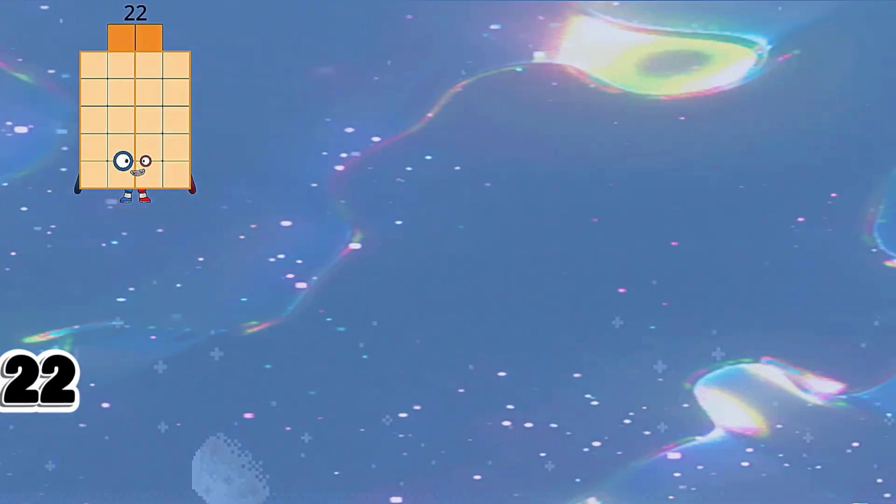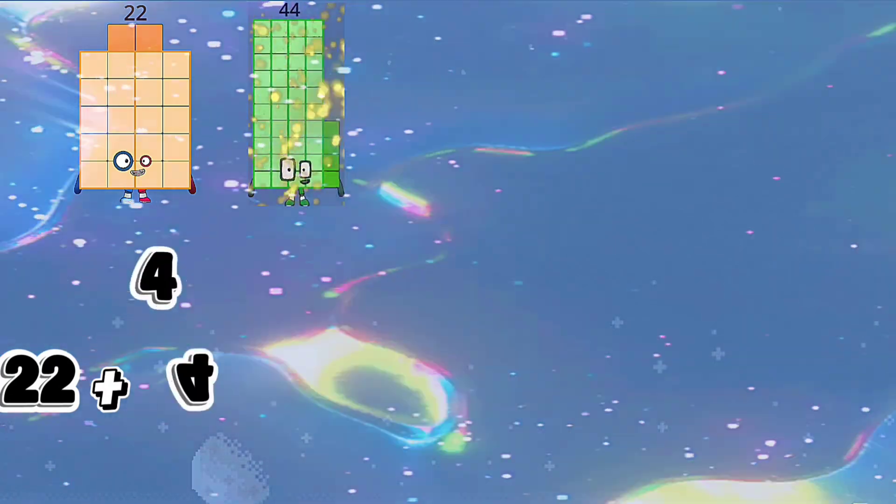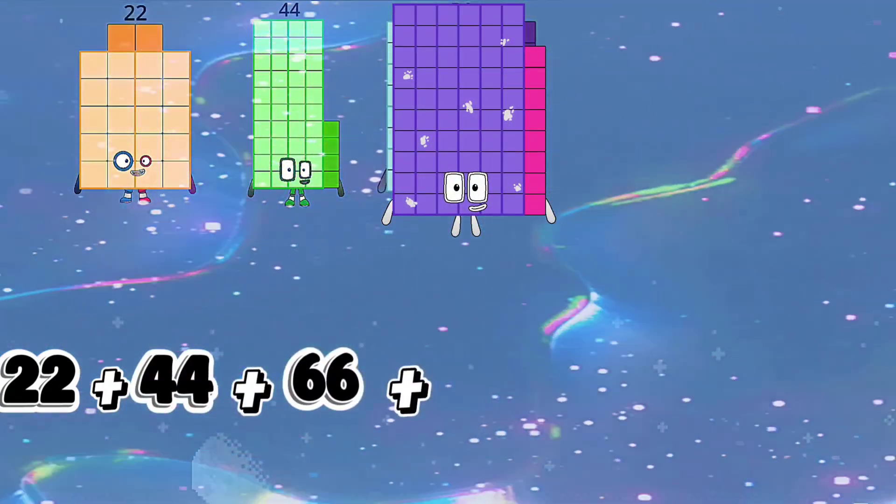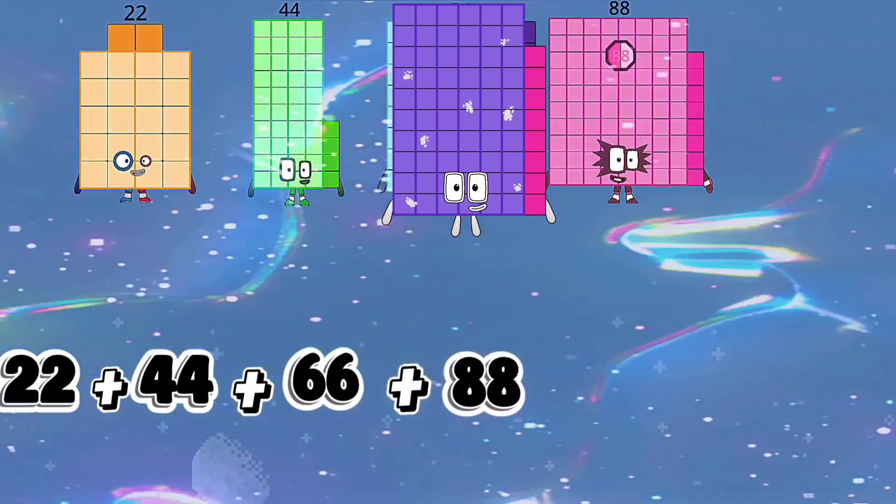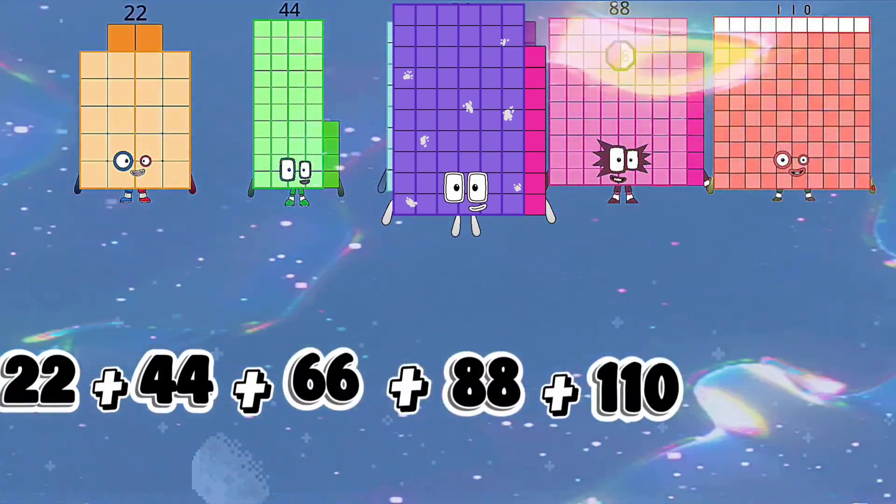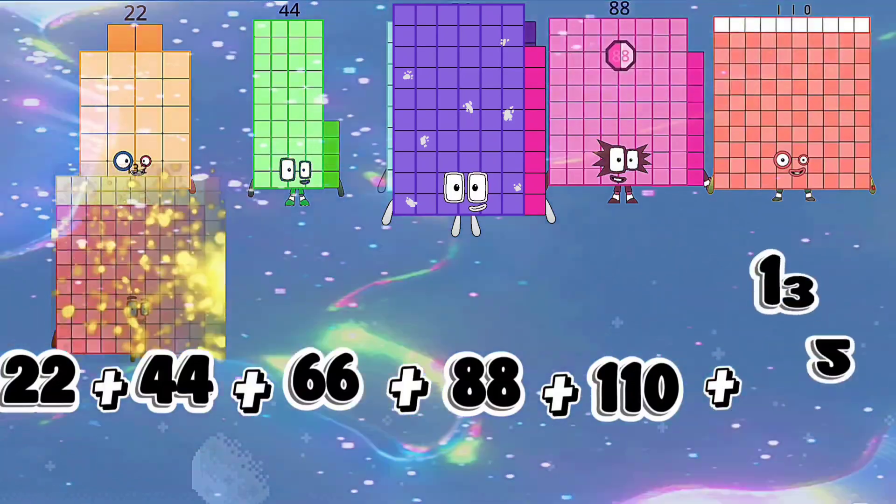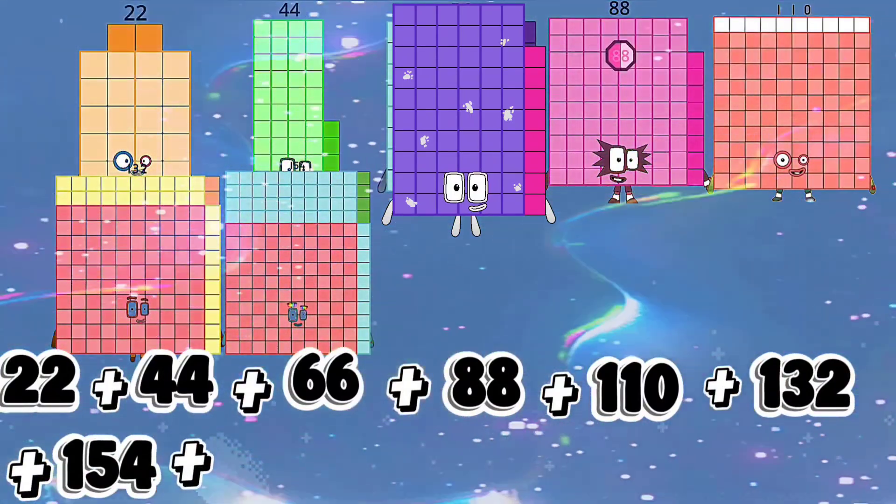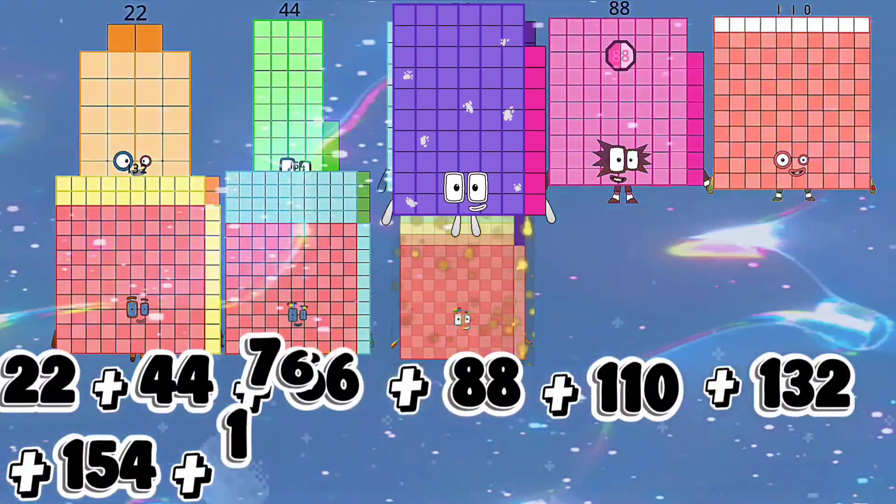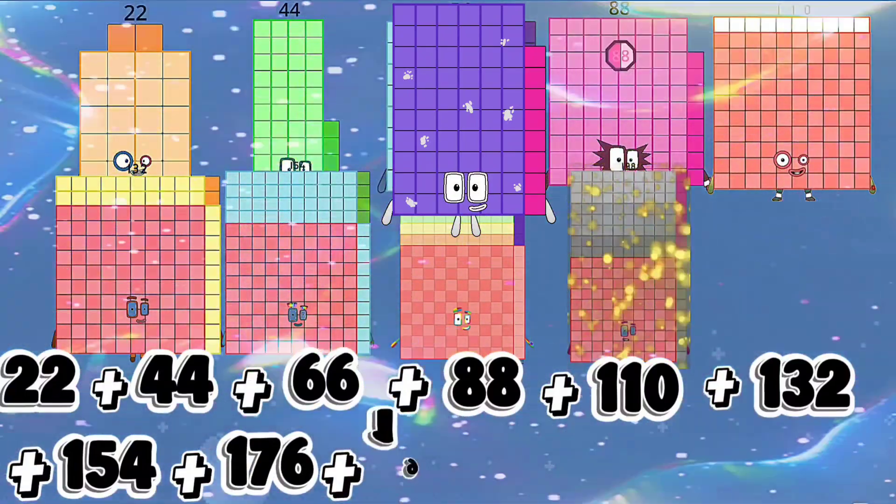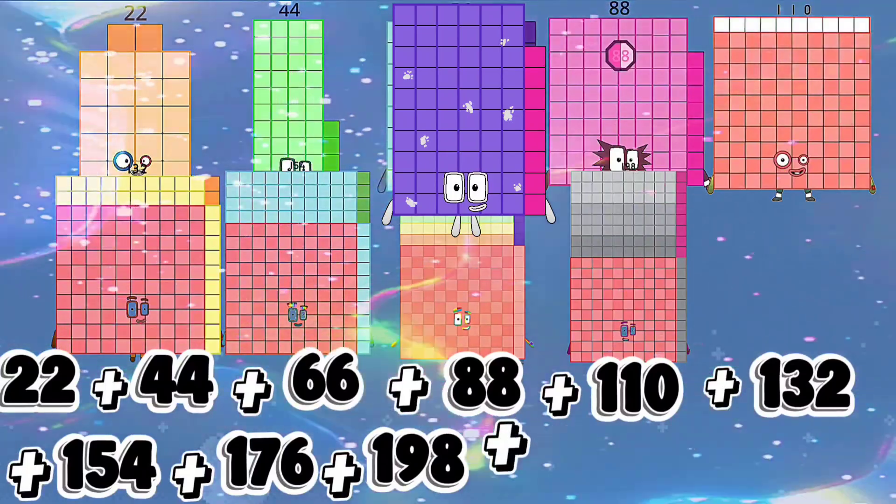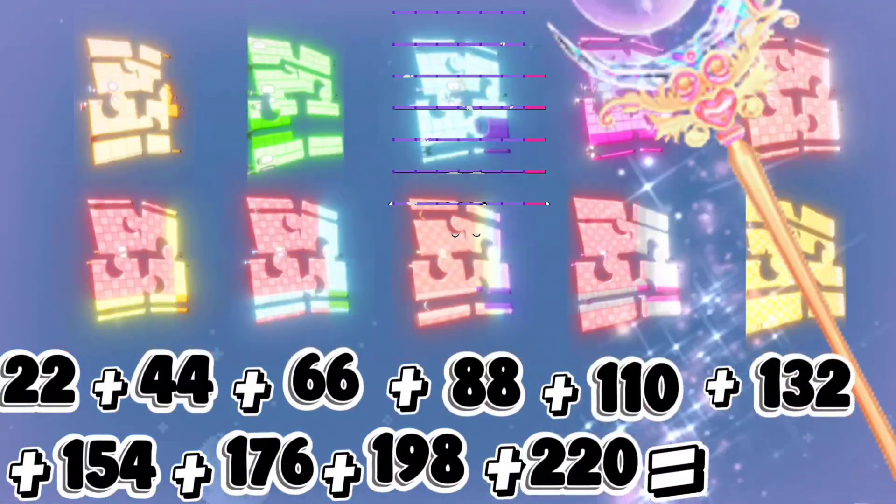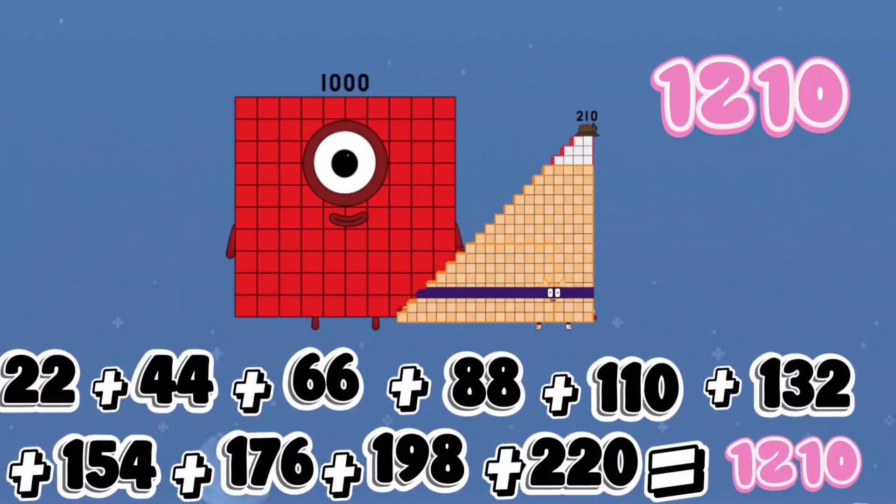22 plus 44 plus 66 plus 88 plus 110 plus 132 plus 154 plus 176 plus 198 plus 220 equals 1210.